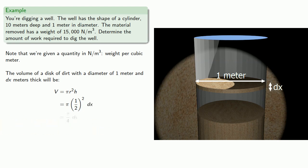And that gives us our volume. So the weight will be the volume times the density, 15,000.